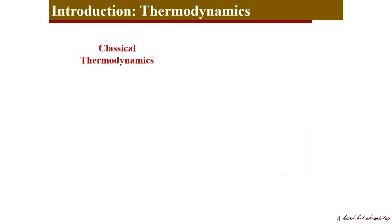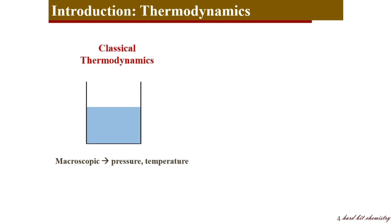Now we will see two aspects of thermodynamics. The first is classical thermodynamics, which looks at macroscopic systems — relatively large systems like a reaction vessel, a beaker full of water, or a test tube full of mixture. It considers macroscopic properties such as pressure and temperature. It is an empirical, experimental approach where ideas are verified by conducting experiments in the laboratory. It is a top-down approach: we observe our macroscopic system and use that information to understand the system at the microscopic level.